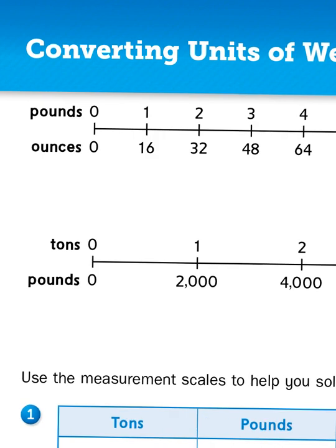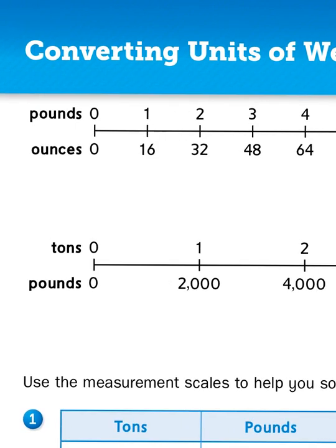Now ounces are our smallest unit of weight. We would measure something like a pencil or a pad of post-its with ounces. But when we get into larger items like a textbook or how big your new puppy is, we're going to be thinking about pounds. So for every one pound, that's the equivalent of 16 ounces.